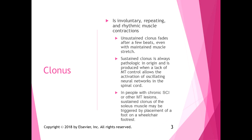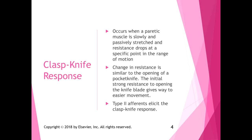The clasp knife response occurs when a paretic muscle is slowly and passively stretched and the resistance drops at a specific point in the range of motion. The reason they call it clasp knife is because the change in resistance is similar to when you open a pocket knife — there's initially strong resistance, and then it gives way to easier movement.